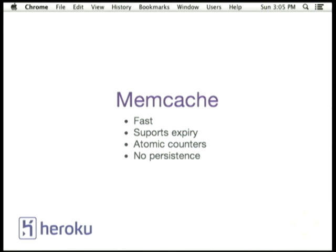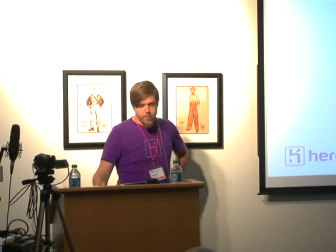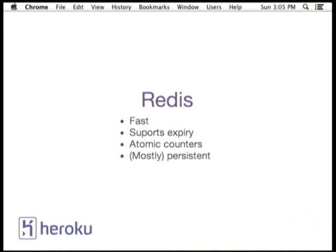Memcache is a pretty good choice for result backends, but it's not persistent, so if you care about your results sticking around when the process restarts, Memcache is probably not your best choice. It does, however, have atomic counters, which are nice, and it supports expiry for keys because you don't want your results hanging around indefinitely. That persistence problem causes me to want to choose Redis normally for my result backend. It has all the same properties as Memcache with the exception of sharding, but you can usually keep it pretty persistent. You could lose a little bit of data, but generally not much.